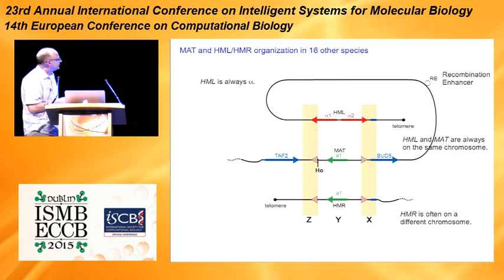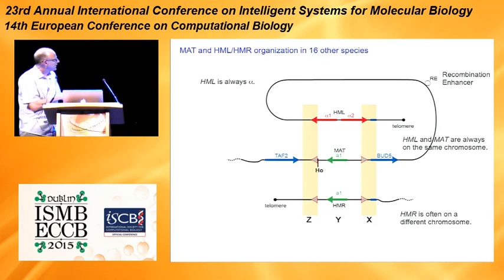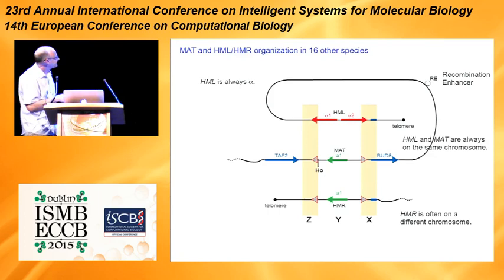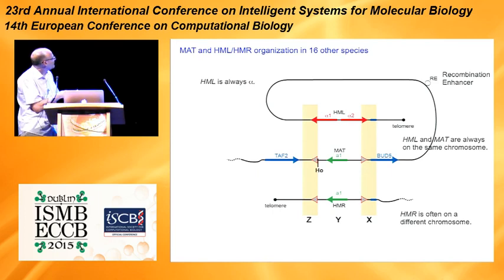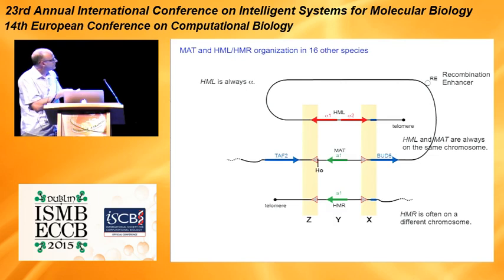We found the same structure in about 15 species closely related to Saccharomyces cerevisiae — they all had triplicated Z and X regions, an expressed MAT locus, and silent HML and HMR. However, sometimes HMR was not on the same chromosome as HML and MAT, but HML and MAT were always linked to each other, between 100 and 300 kilobases apart. It appears that this reaction needs to happen in cis for switching — involving replacement of DNA by HML as the donor of silent alpha information.